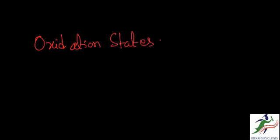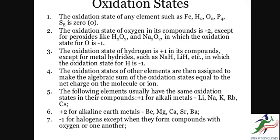Next we will learn about Oxidation States. The arbitrary charge assigned to an atom in a compound is known as the Oxidation State or Oxidation Number. Now the Oxidation State of any element such as Iron, Hydrogen, Oxygen, Phosphorus or Sulphur is zero.